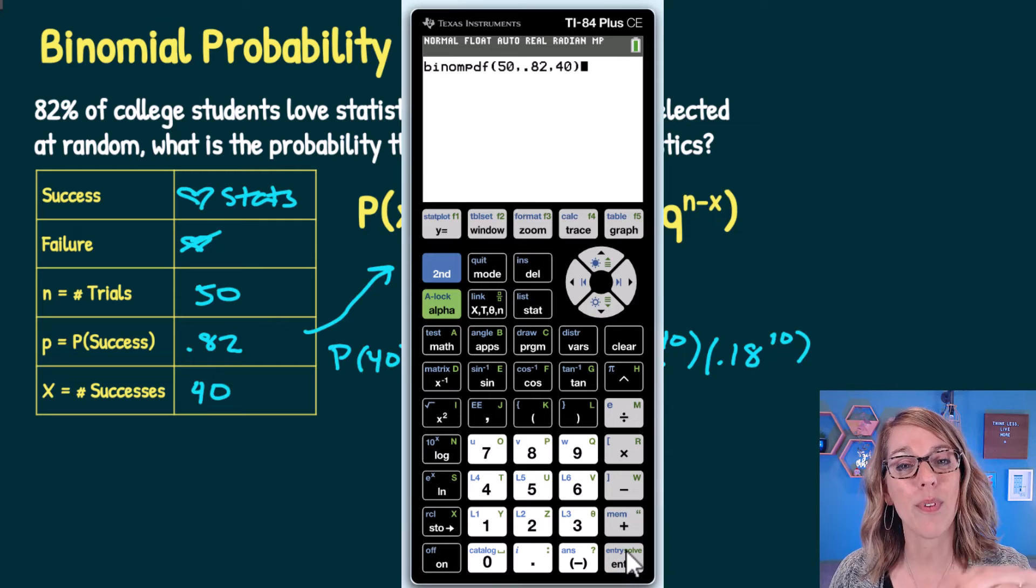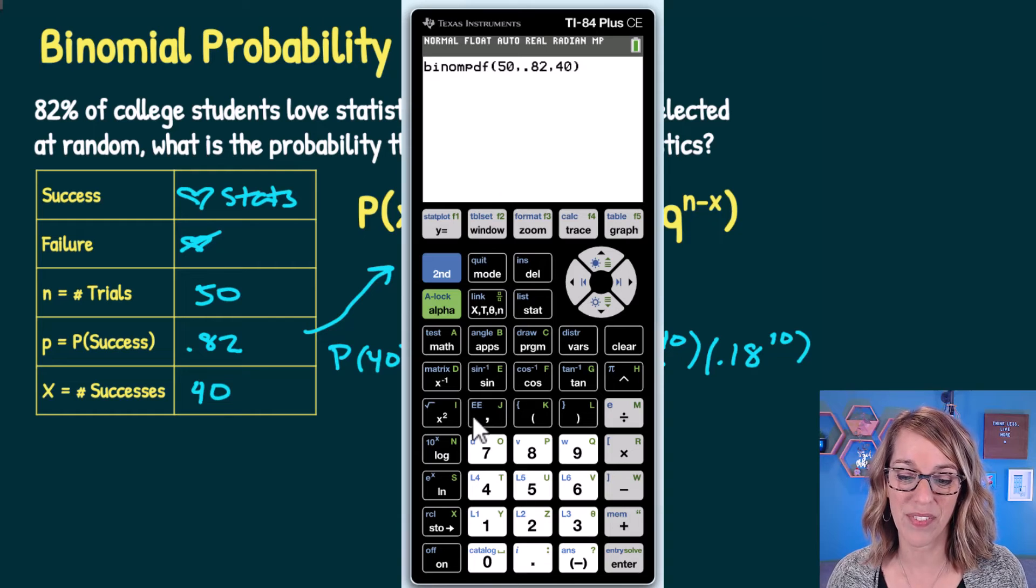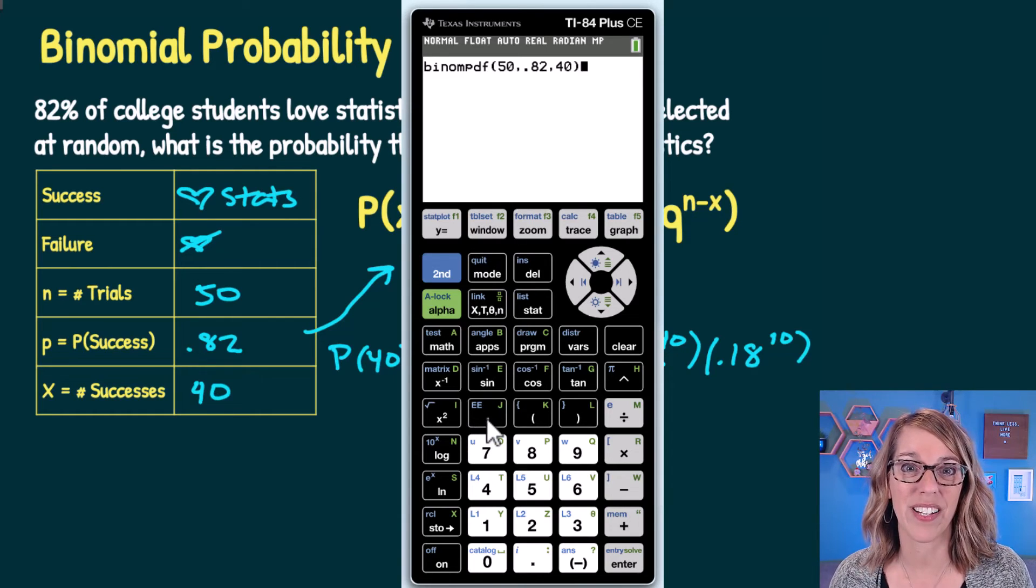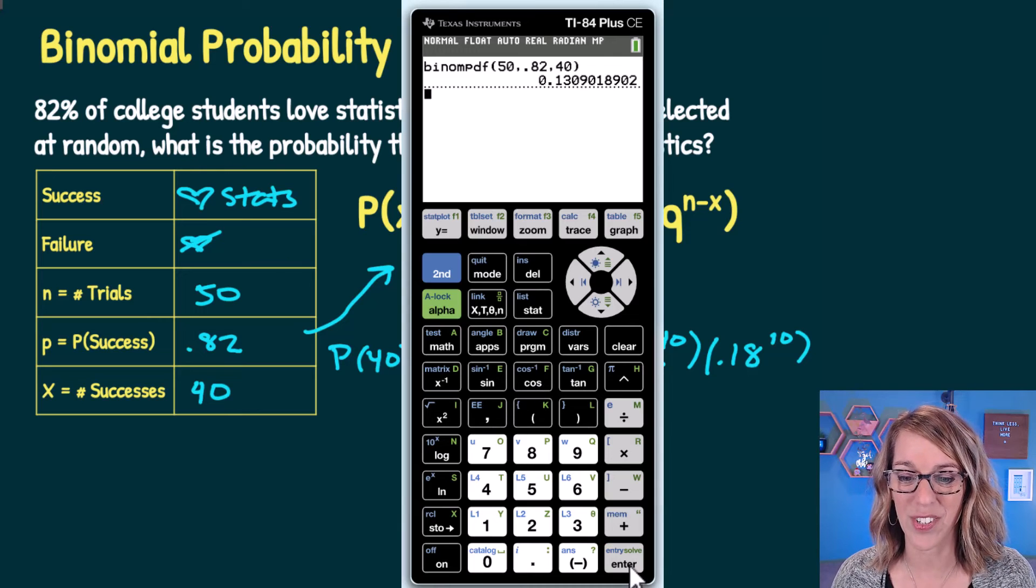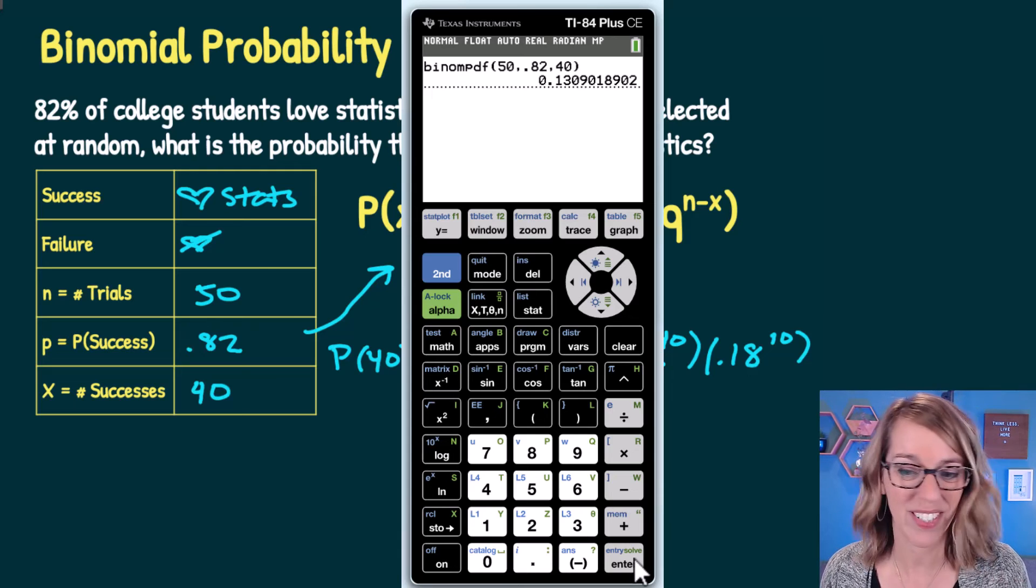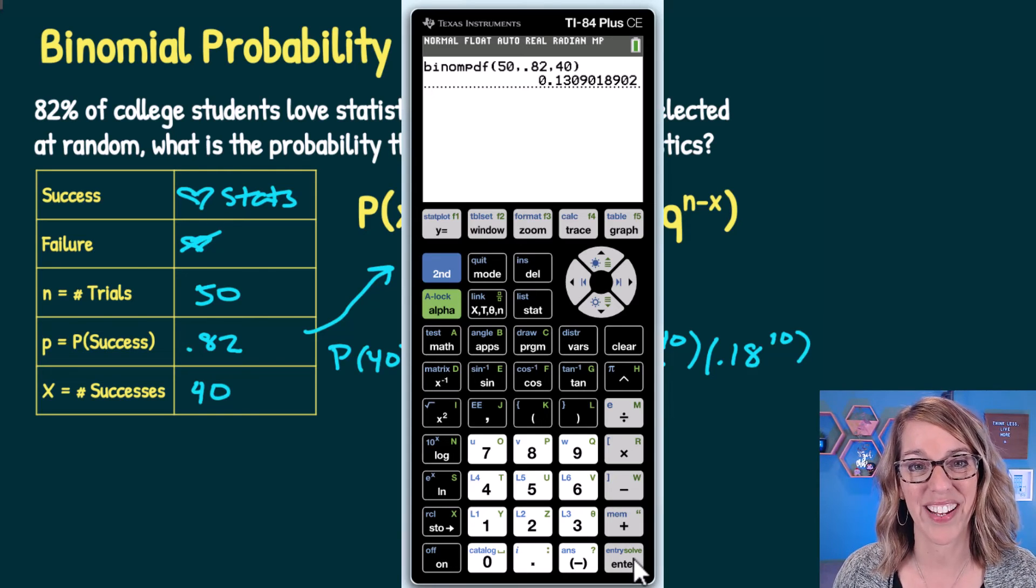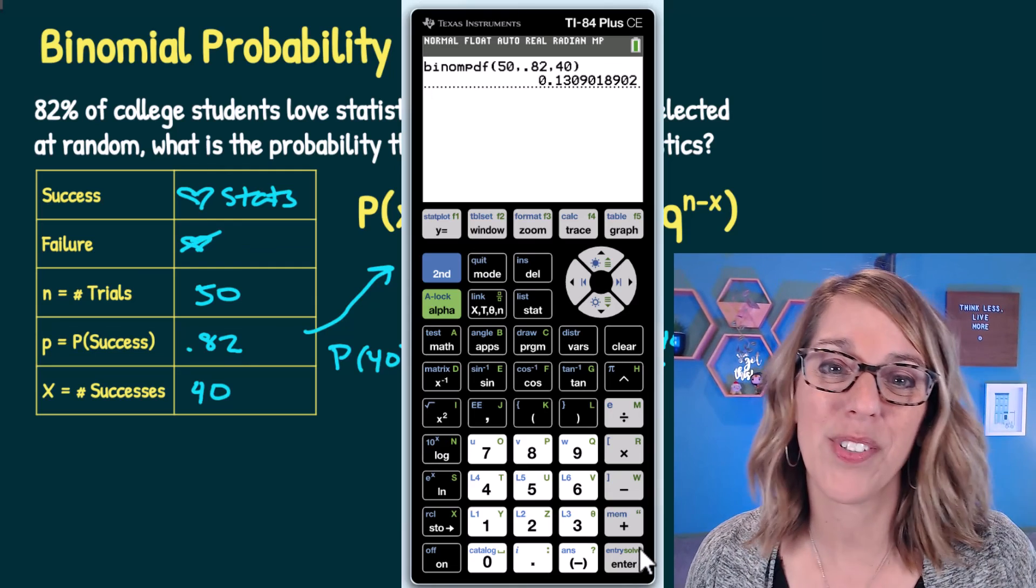If your calculator didn't prompt you, type exactly what you see after binompdf: 50 comma 0.82 comma 40. Hit enter, and you get a probability of 0.1309, or about 13%.